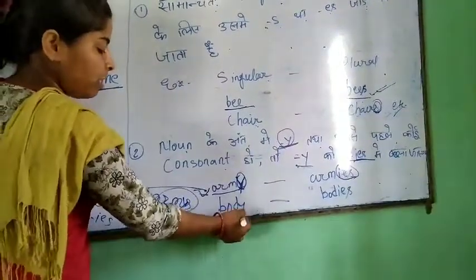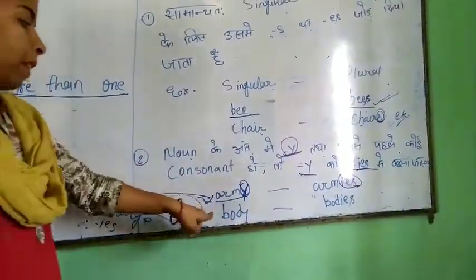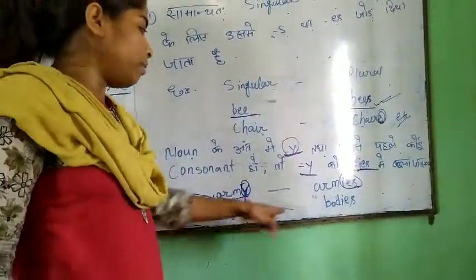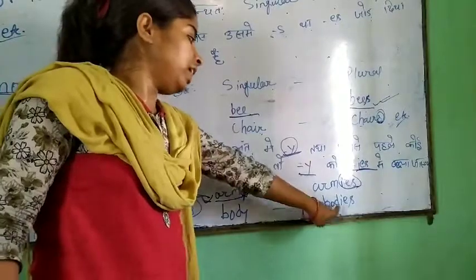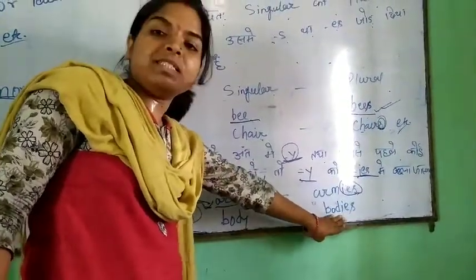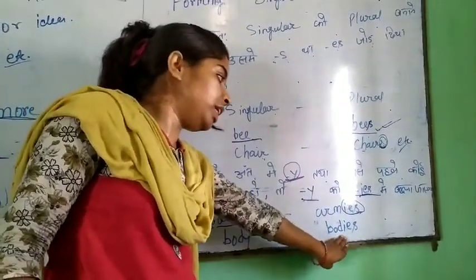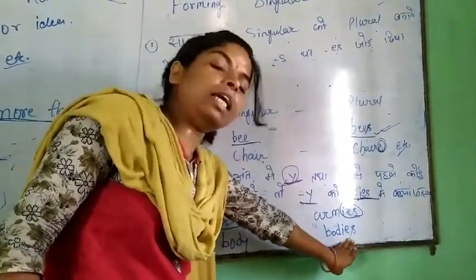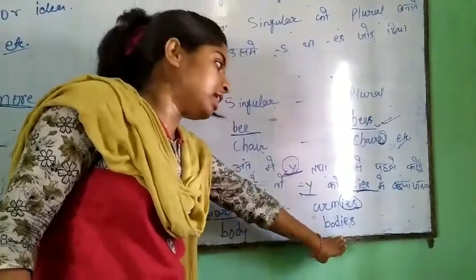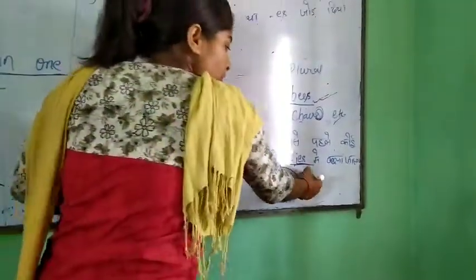For example, 'body' — body ko B, O, D, then 'y' ko hatao aur 'ies' lagao — 'bodies'. This is your plural noun.